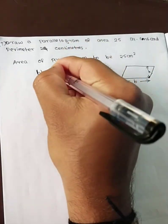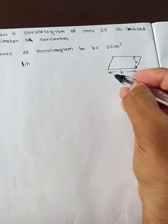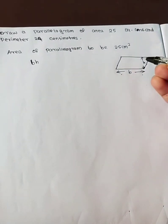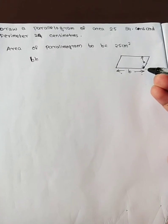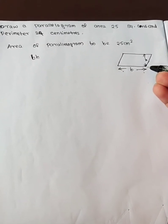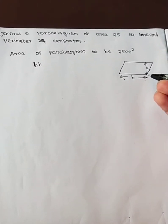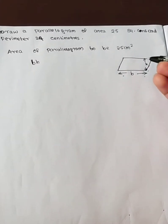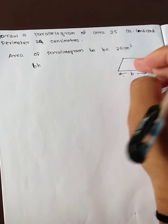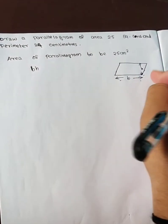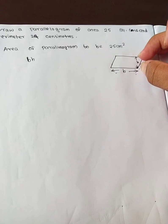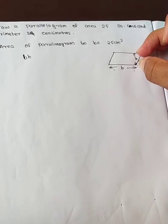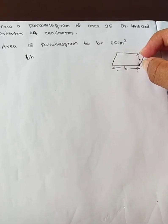B times H: this is one side into the distance to the opposite side — the parallel opposite side. The distance is the height, and the height is the same.